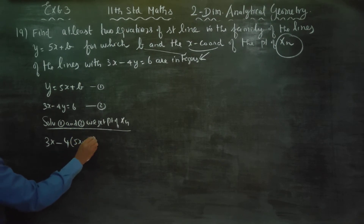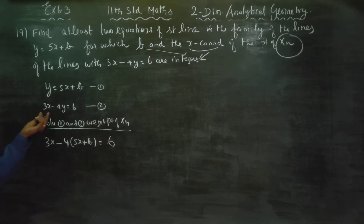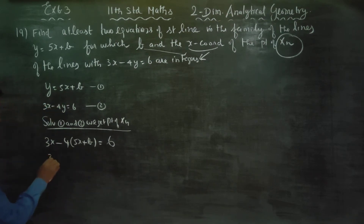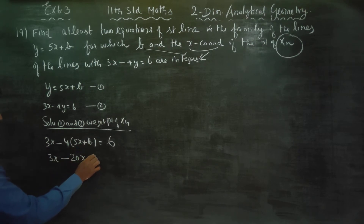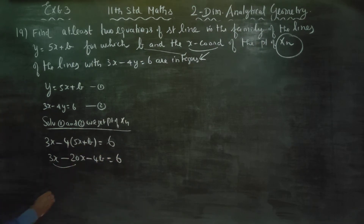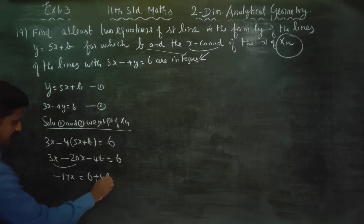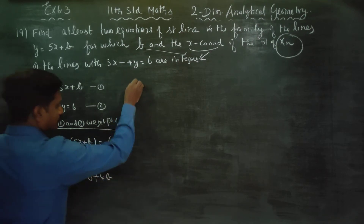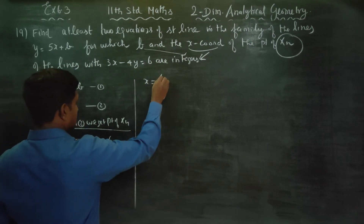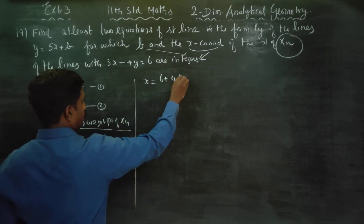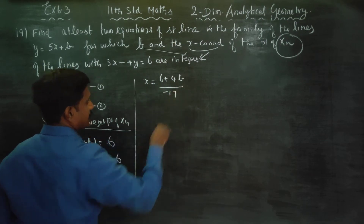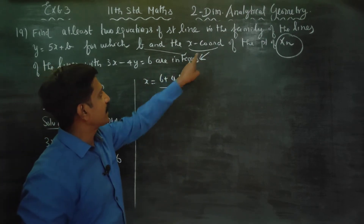Substituting y = 5x + b into 3x minus 4y = 6, we get 3x minus 4(5x + b) = 6, which gives 3x minus 20x minus 4b = 6, so minus 17x = 6 minus 4b, therefore minus 17x plus 4b = 6. Rearranging: minus 17x = 6 minus 4b, so x = (6 + 4b) divided by minus 17.